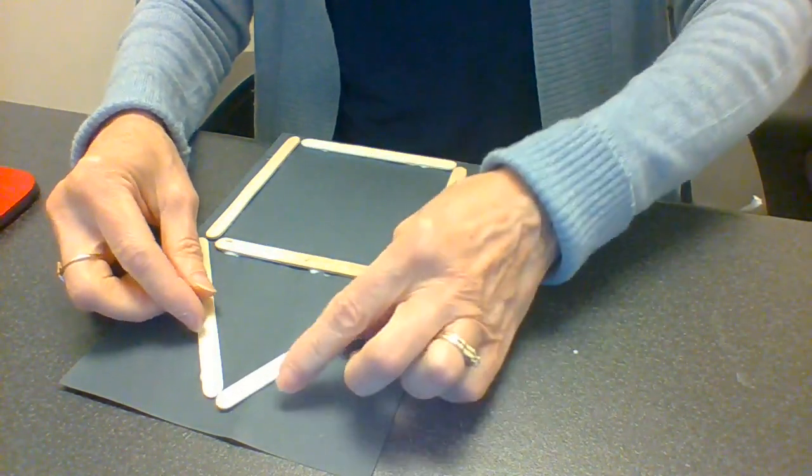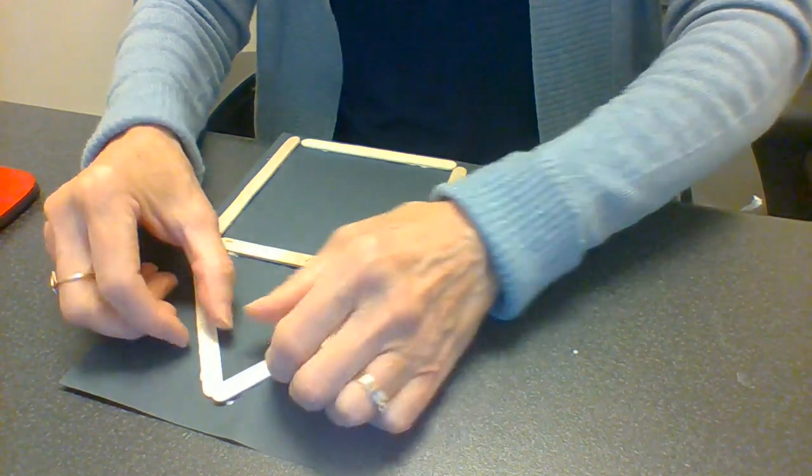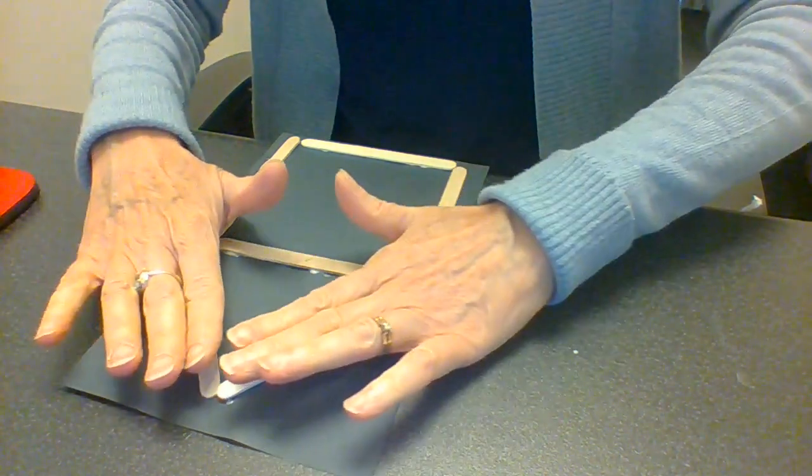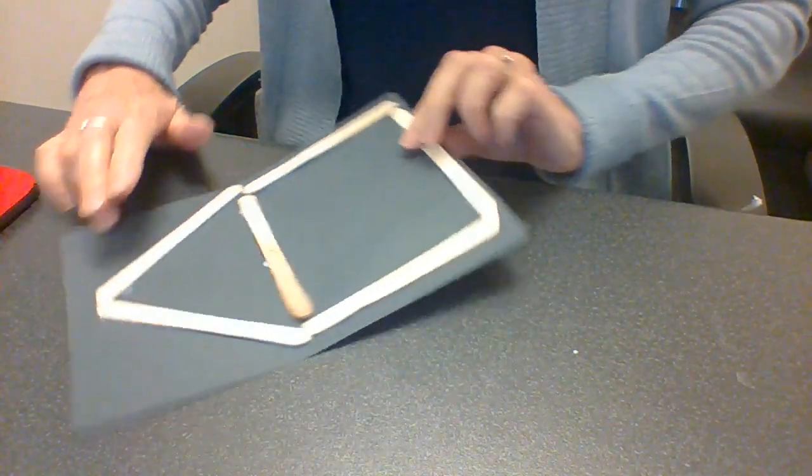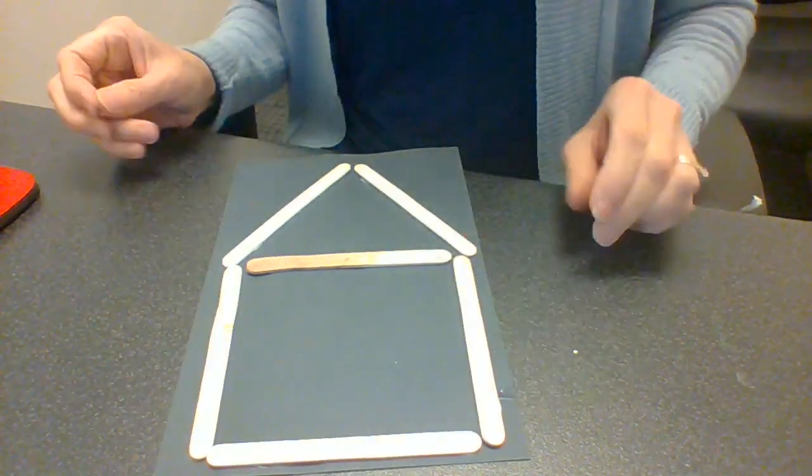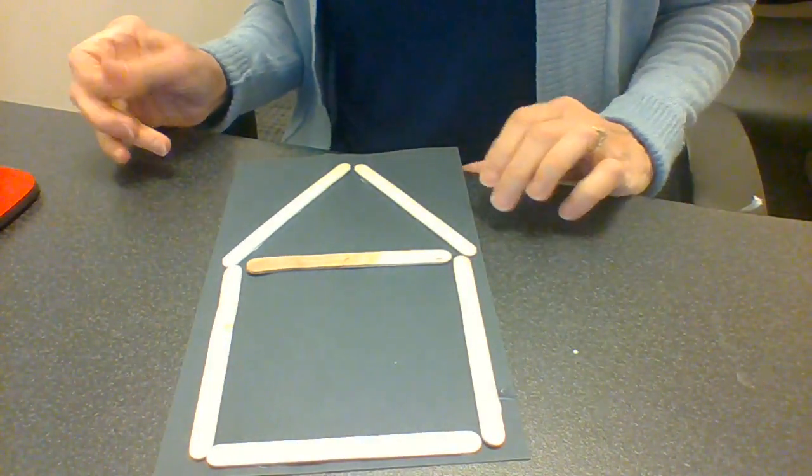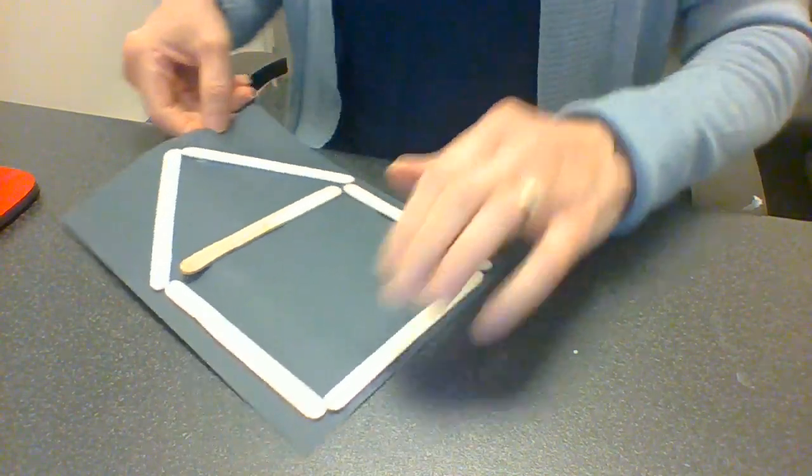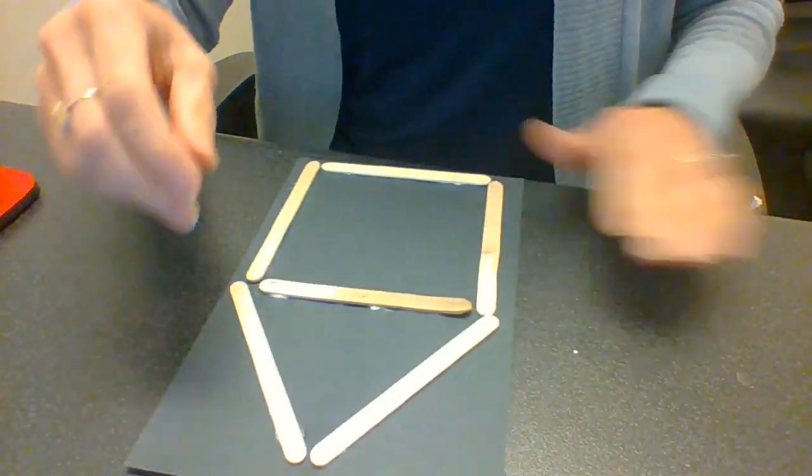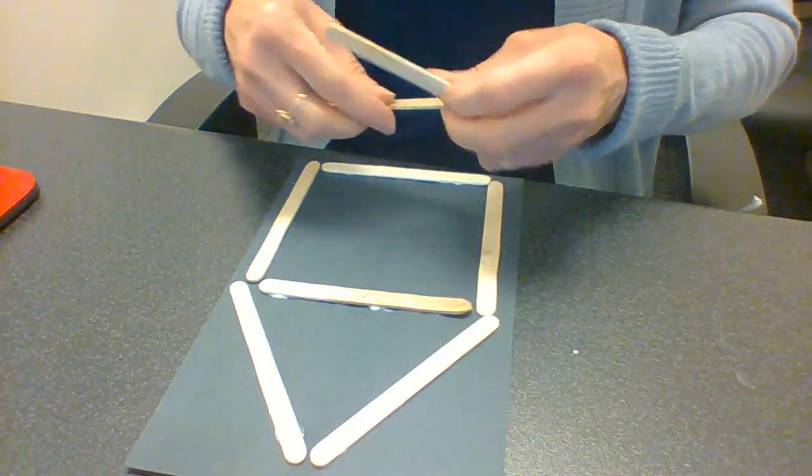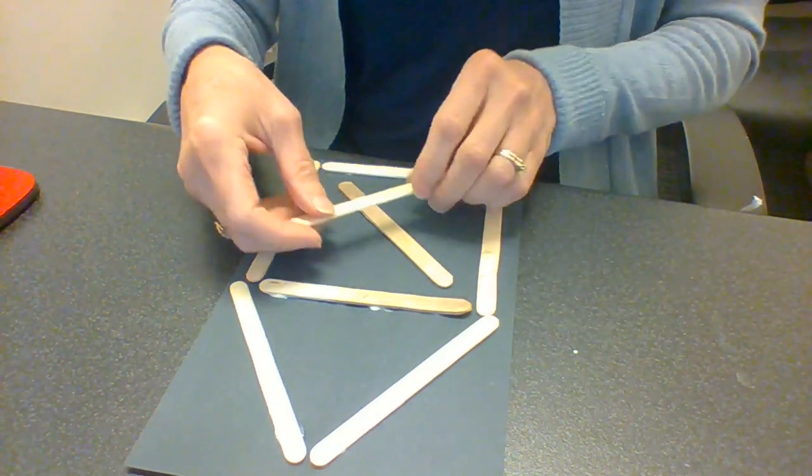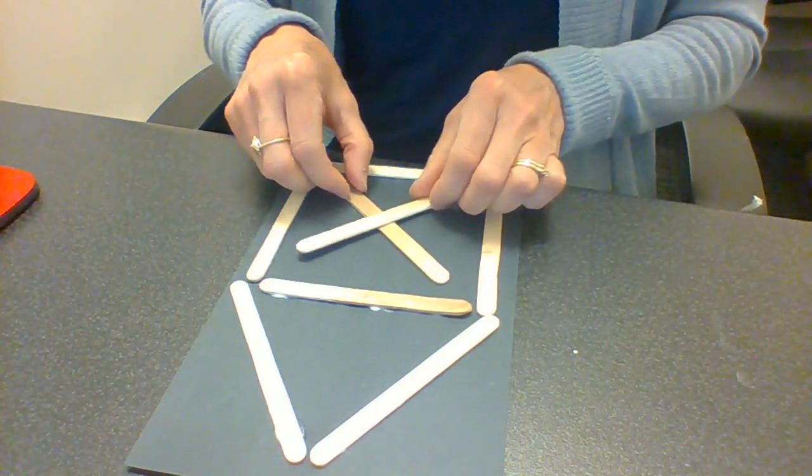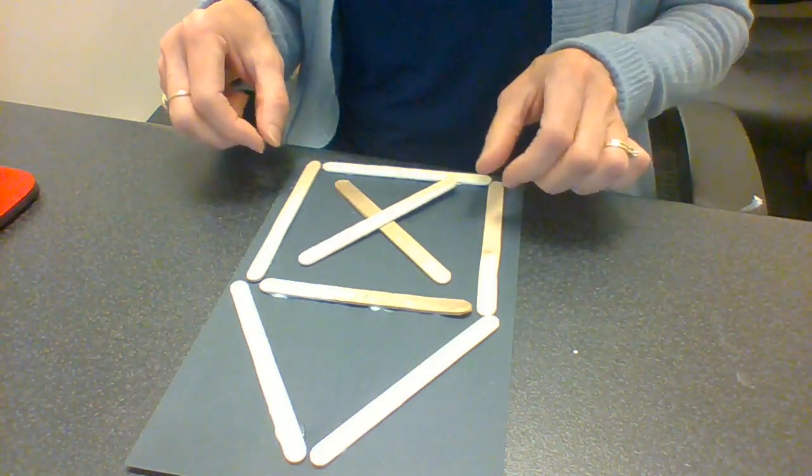And while I was singing that, I got my glue on my two sticks. Press them down. Now it looks like a house, so we want it to look like a barn, not a house. So it's going to have crossed sticks going like this in the middle, because barns often have a door with a big X shape on it.